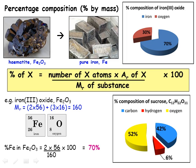Here's the percentage composition of the sugar sucrose, which has the formula C12H22O11. Pause the video and prove that you can work out the percentage of carbon, the percentage of hydrogen, and the percentage of oxygen correctly.